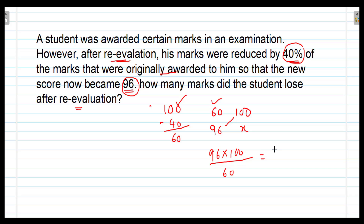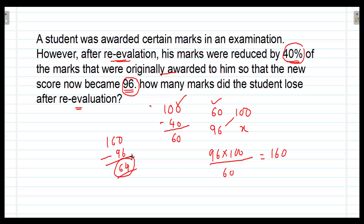That is equal to 160. It means the original marks were 160. His new score is 96, so 160 minus 96 equals 64. His score was reduced by 64 marks after the re-evaluation.